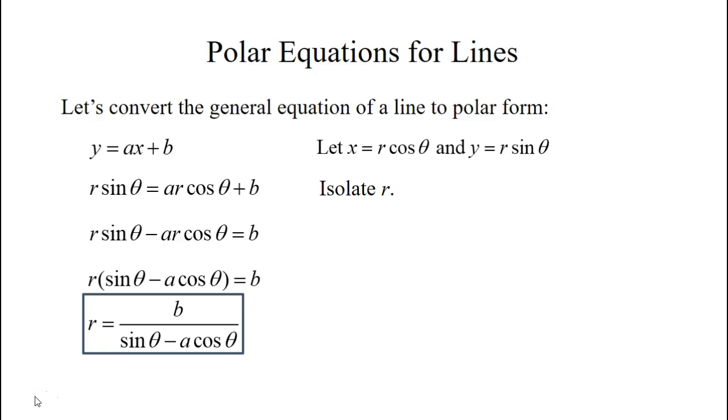And then we'll divide b by sine theta minus a cosine theta. And we get a general form for the equation of a line in polar form where a is your slope and b is the y-intercept.